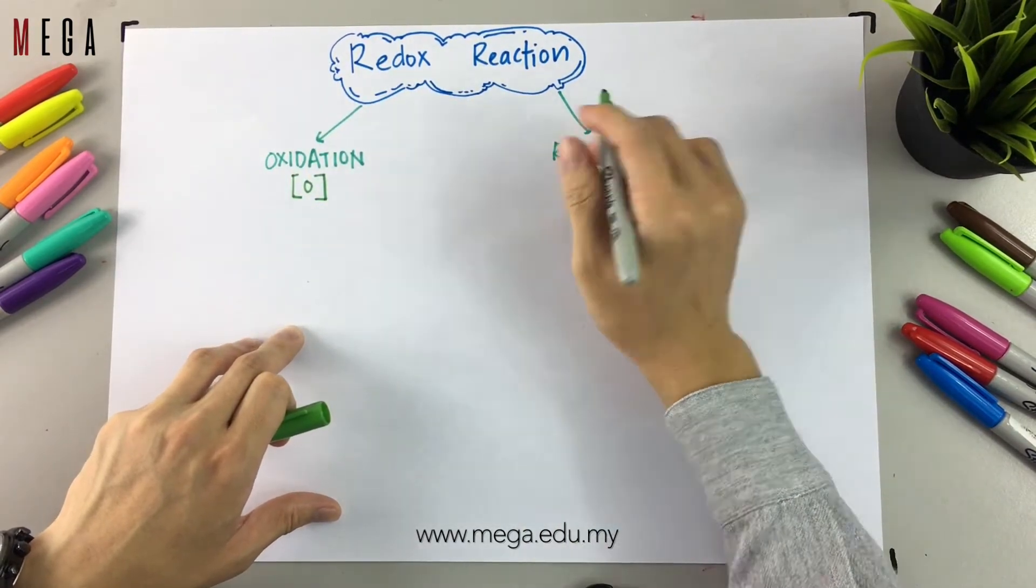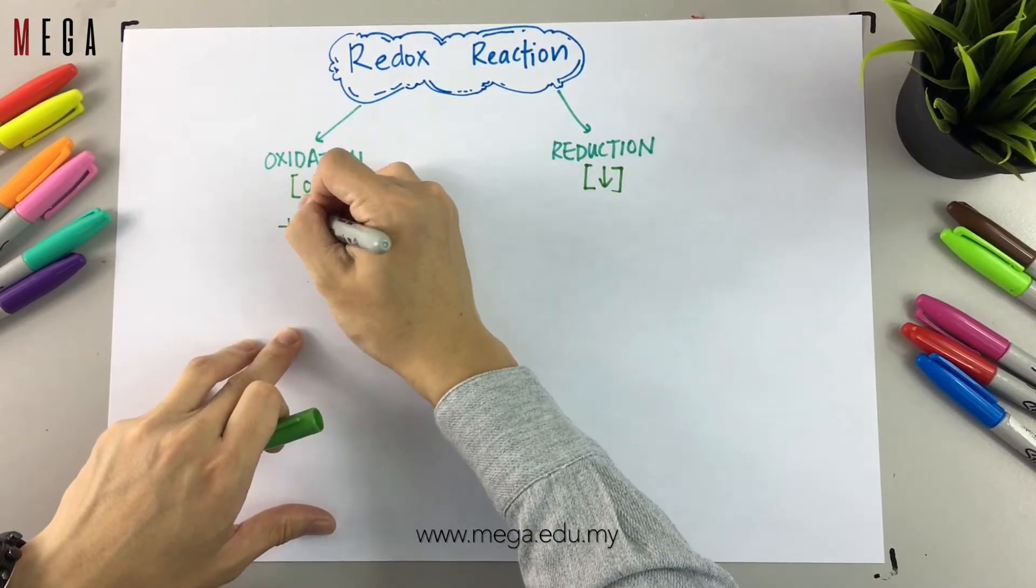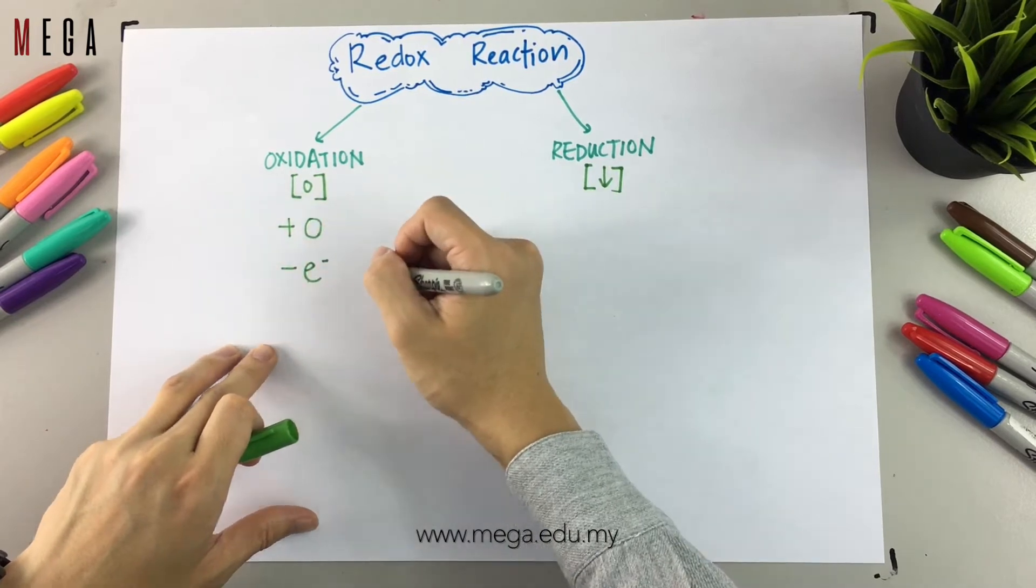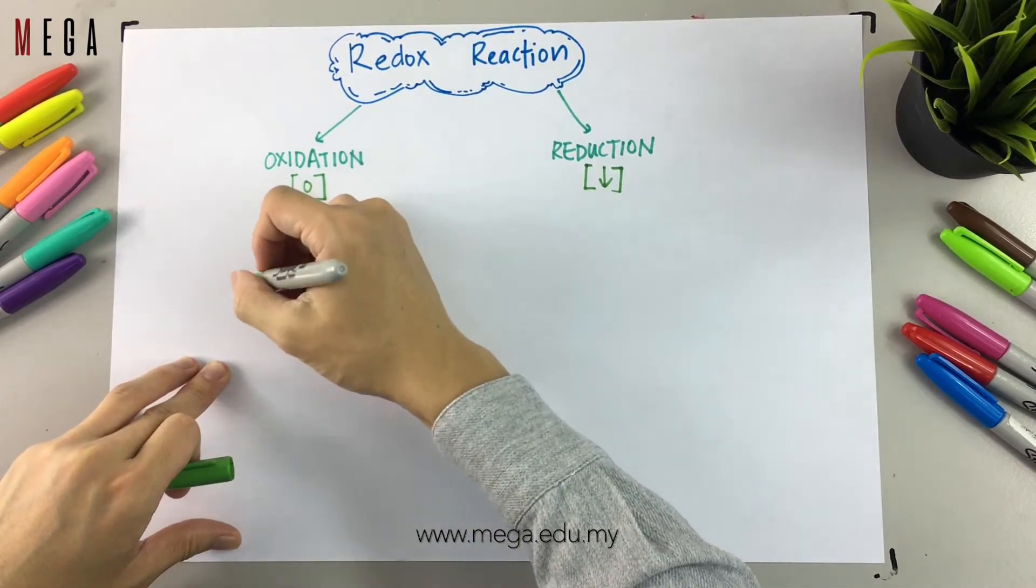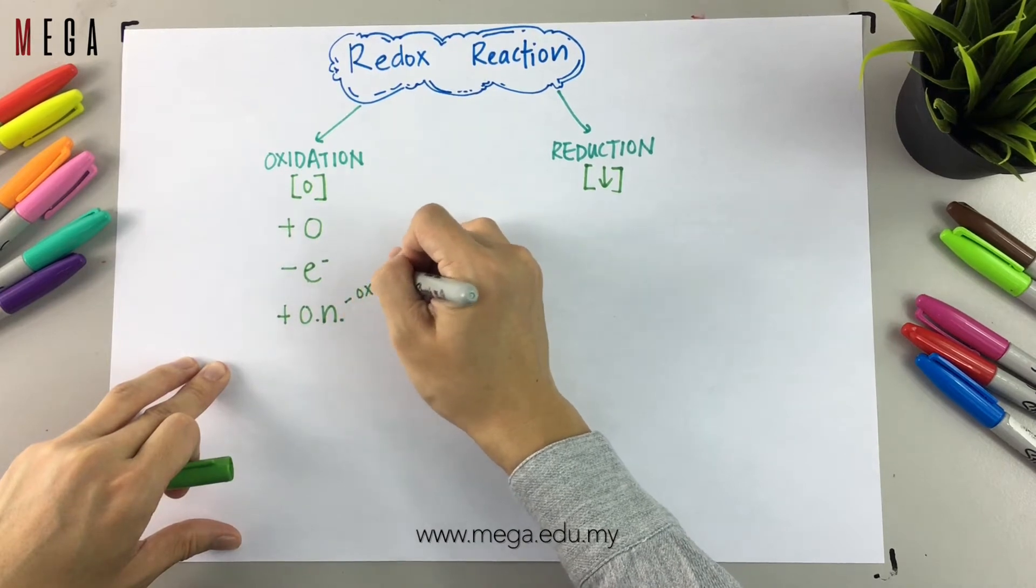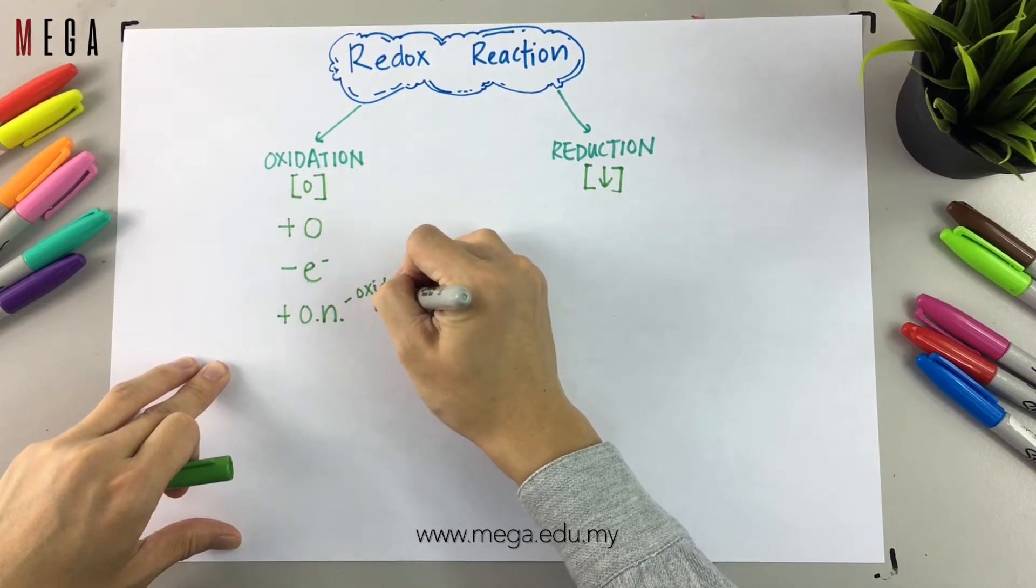So what happens during oxidation and what happens during reduction? During oxidation, the compound will gain oxygen, lose electrons, or increase in oxidation number, which is the ON.